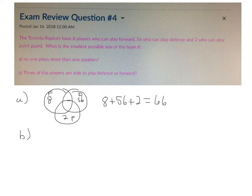So what happens though for part B is if we draw another of our diagrams here, Venn diagrams, and we start off the same way, then this time we have three players who are in the intersection between the forward and the defense players.